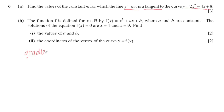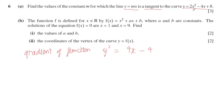The gradient function is y', the first derivative. For our y, the first derivative gives us 4x minus 4, because differentiating 2x squared gives 4x and differentiating minus 4x gives minus 4. So y' equals 4x minus 4.